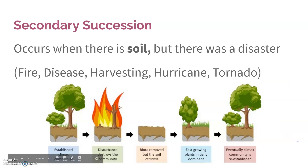Secondary succession occurs when there is some sort of disaster — maybe a fire or disease, maybe humans harvested an area, or a hurricane or tornado — anything that causes some sort of wipeout of the community but leaves behind soil. We call that a disturbance.